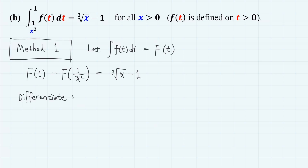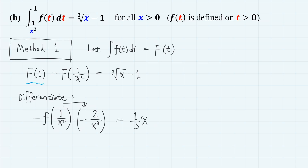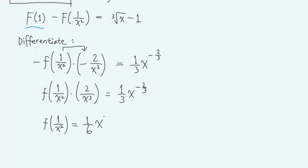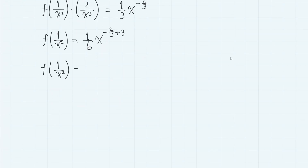Differentiating with respect to x, the constant F(1) term gives 0. So we have minus f(1/x²) multiplied by the derivative of 1/x², which is minus 2/x³. On the right-hand side, we have (1/3)x^(−2/3). So f(1/x²) · (2/x³) = (1/3)x^(−2/3), which gives f(1/x²) = (1/6)x^(7/3).